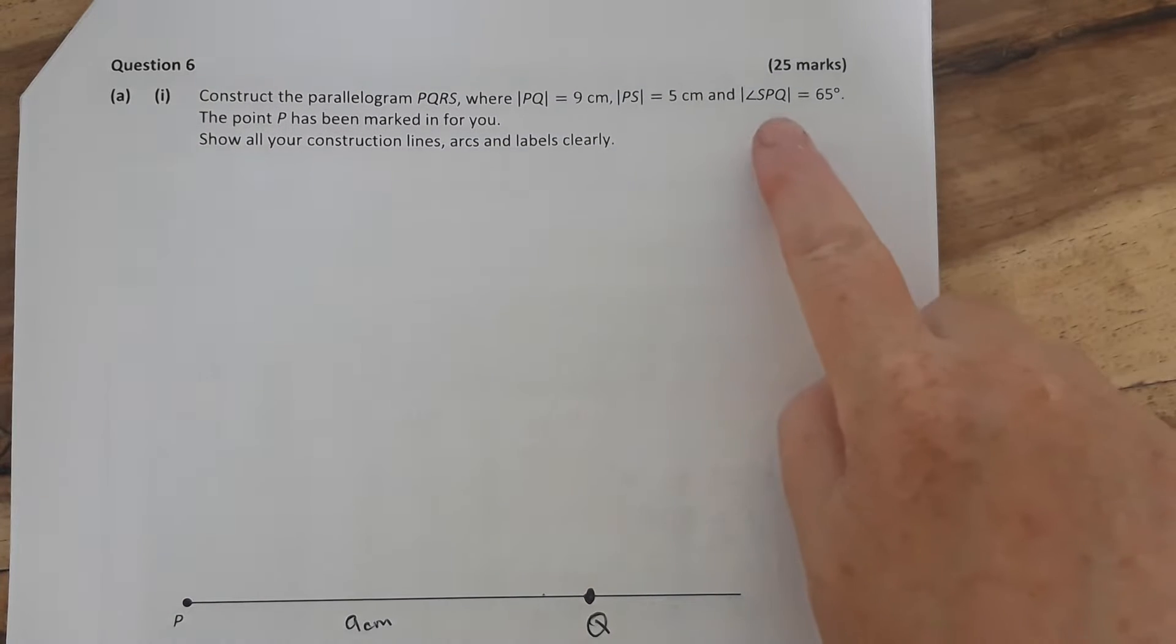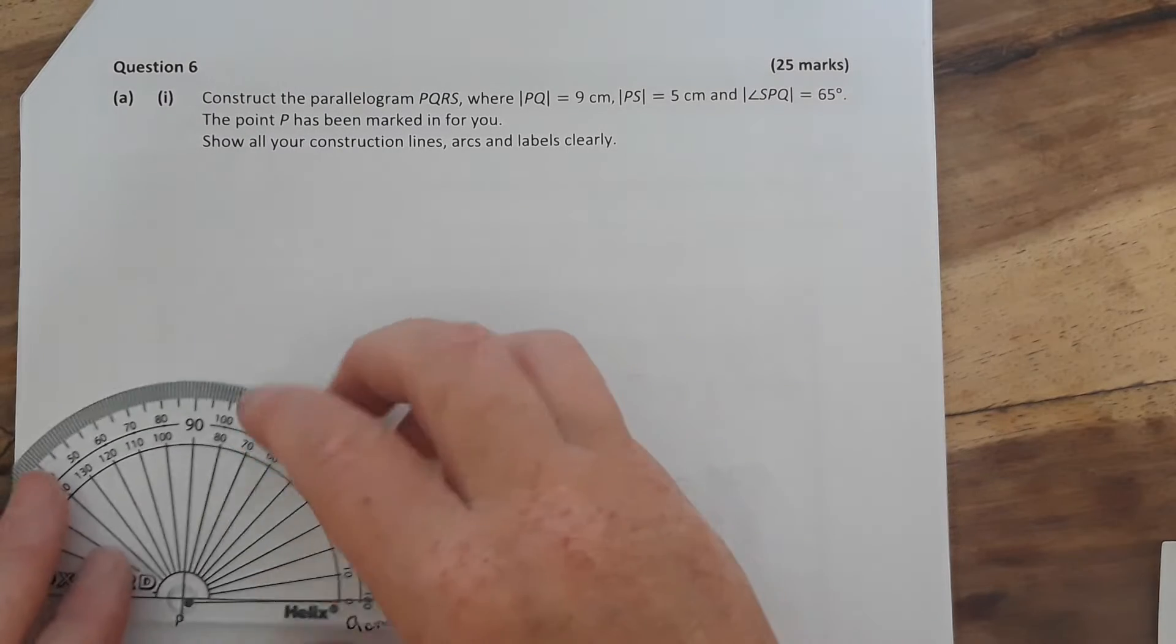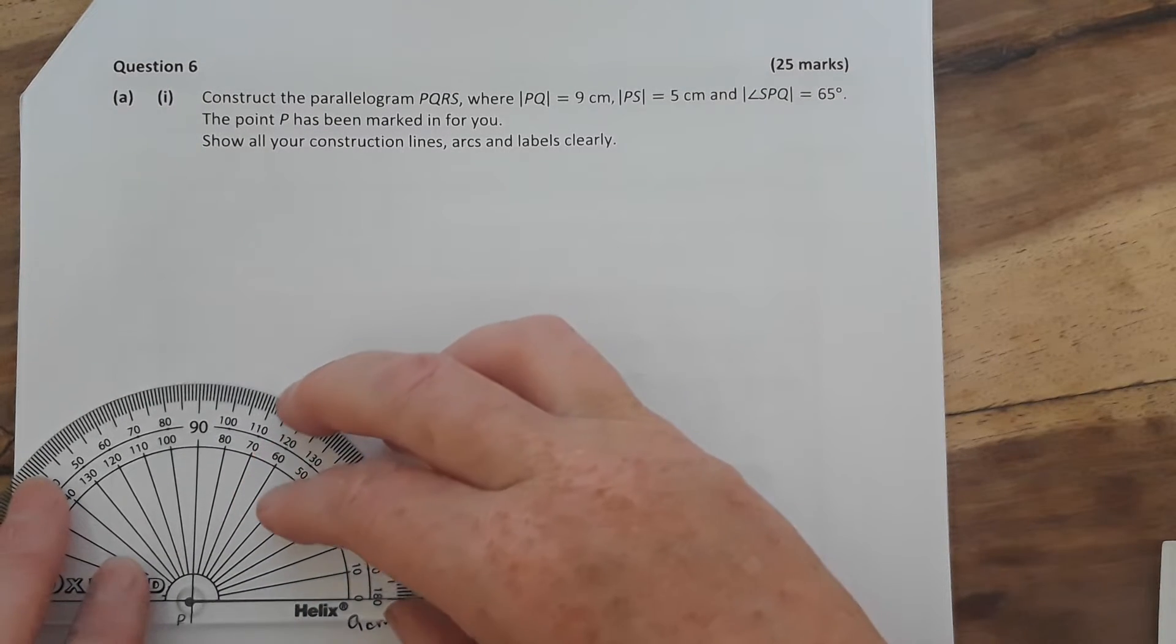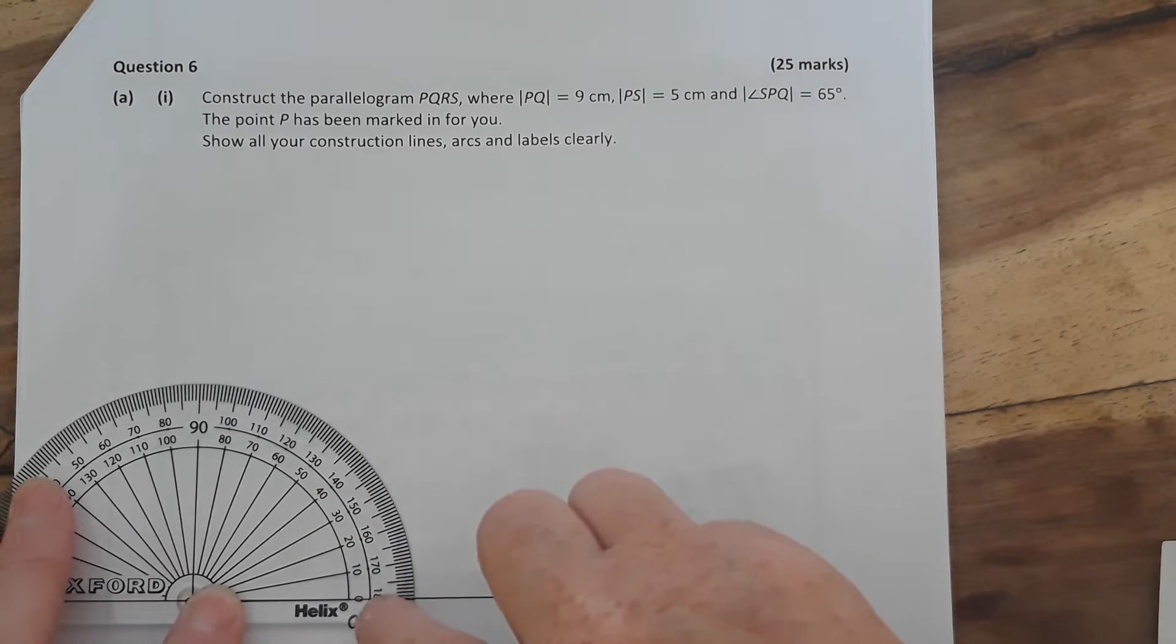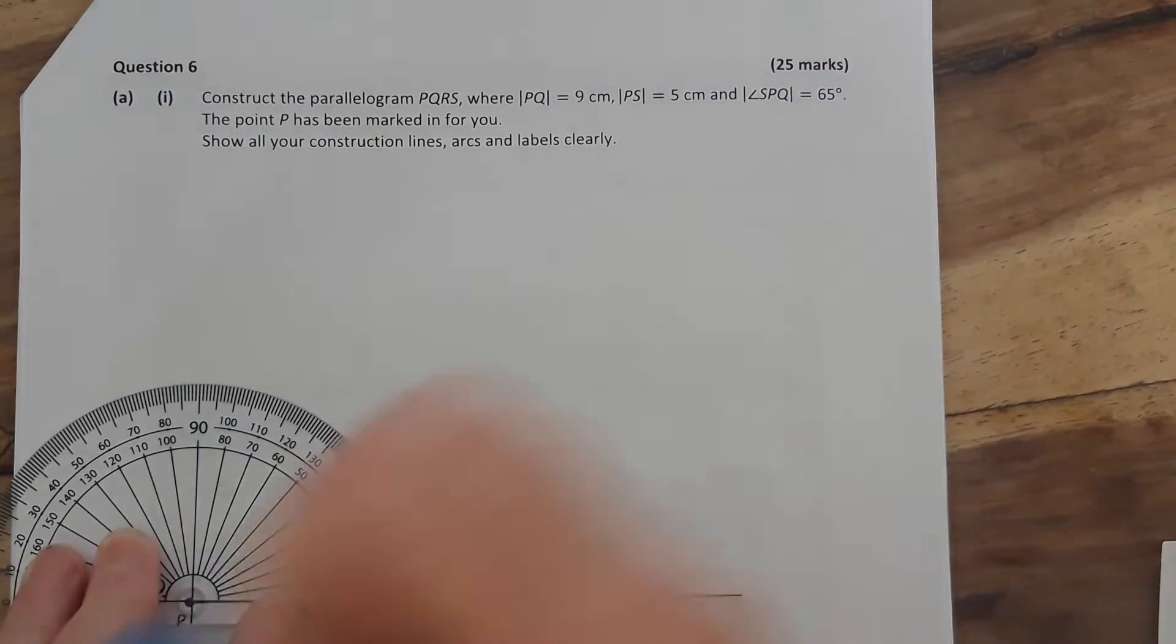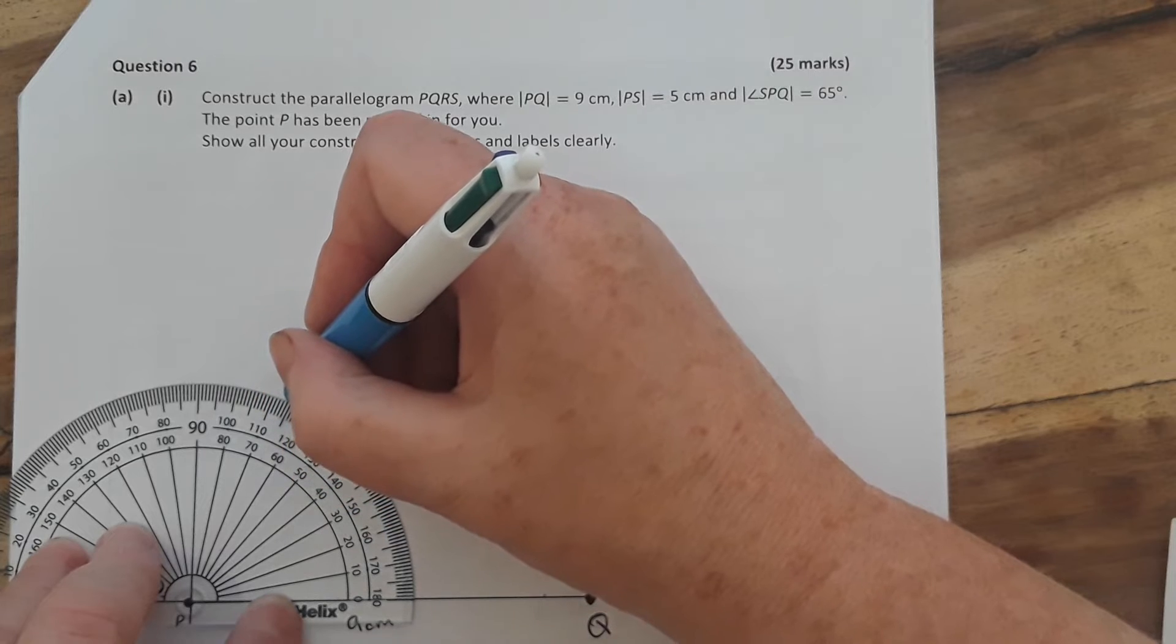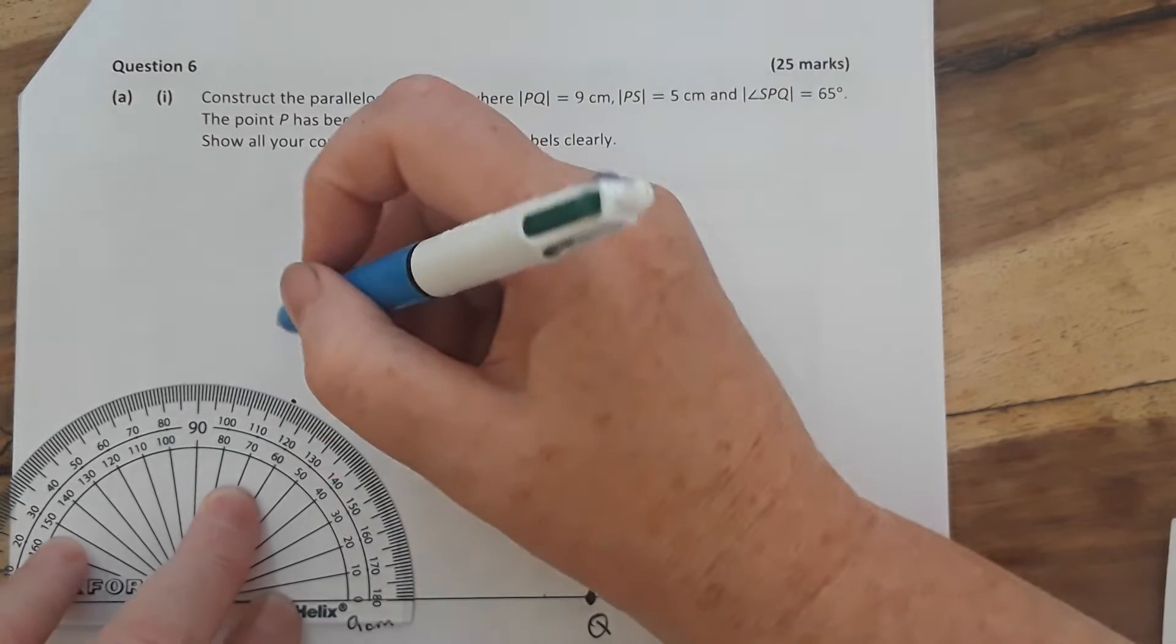So there is nine centimeters and that is my Q. Now the next thing we're going to do is actually measure our angle SPQ. So that's the angle here at P, so it's 65 degrees. You're going to put your protractor down, make sure the X is on P. Now see where the line goes and look to see where is the zero. Is it on the inner track or the outer track? In this case it's on the inner track, so I'm going to go to 65 on my inner track, which is there.